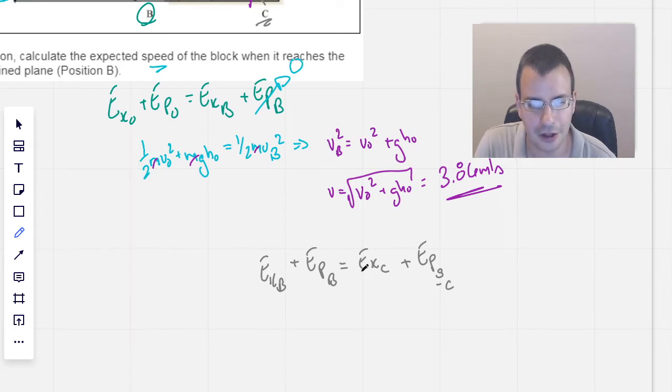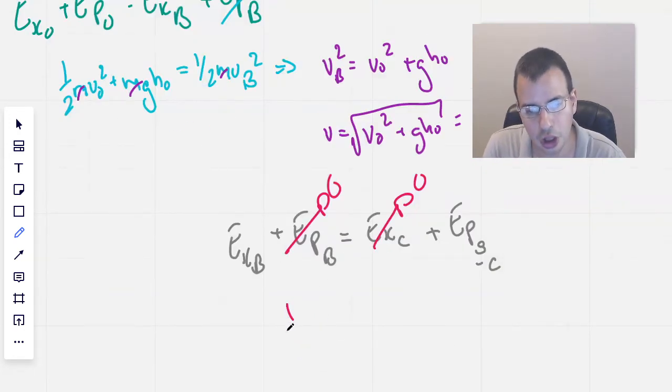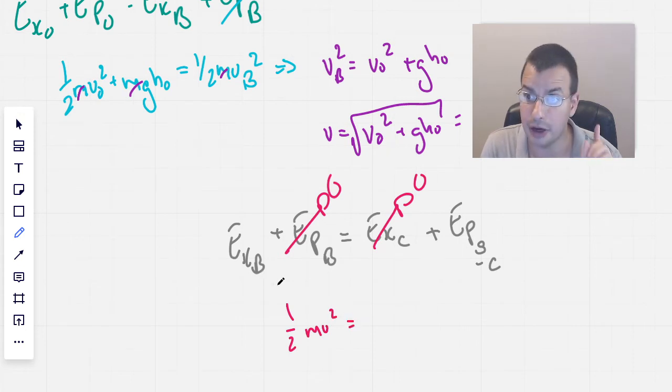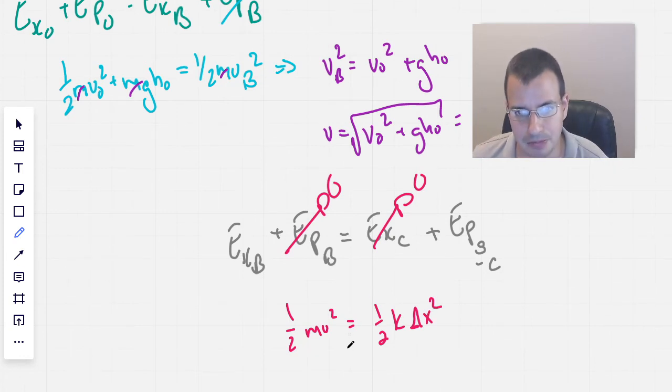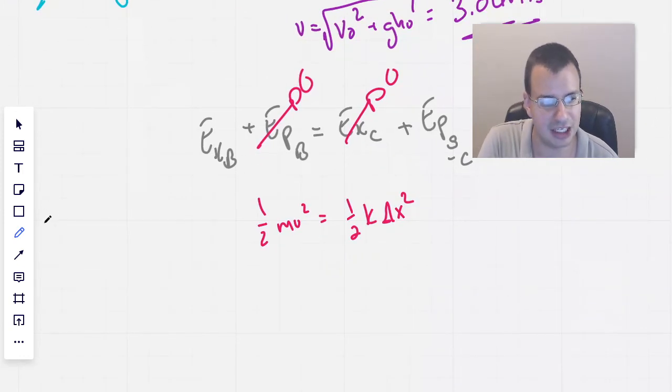So energy potential at B is going to be 0, energy kinetic at C, we're going to say it comes to a complete stop. So then we have 1/2 m v squared, which is the kinetic energy from the, at point B, at the bottom of the incline, and that's going to be 1/2 k delta x squared.